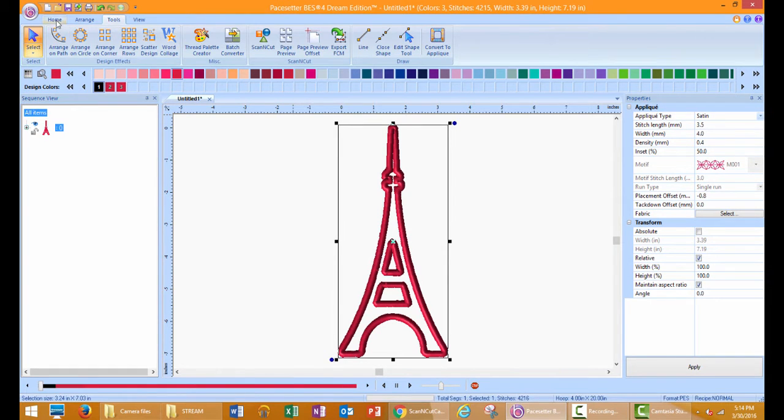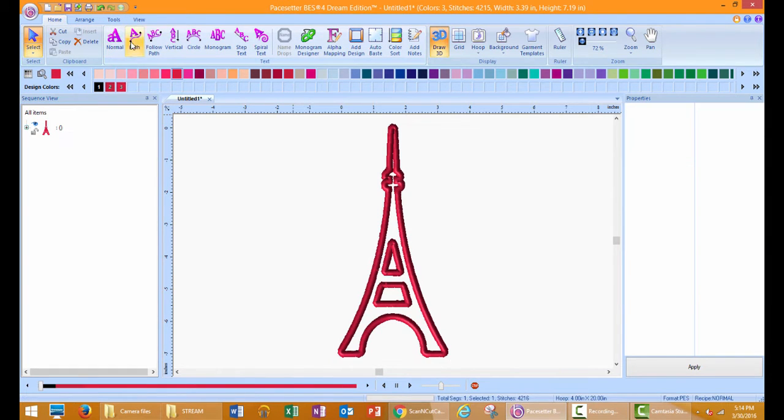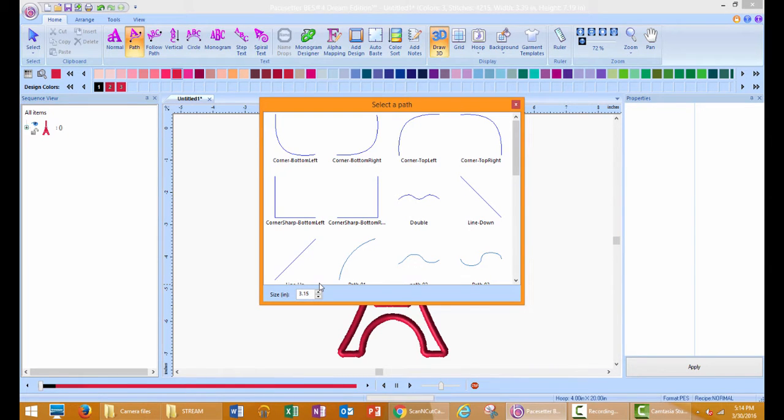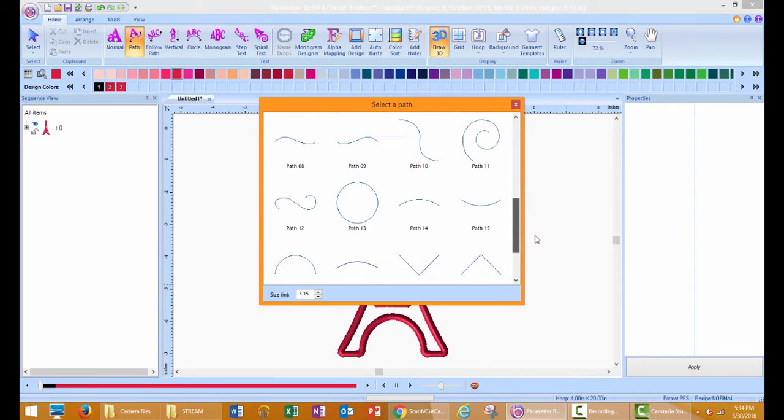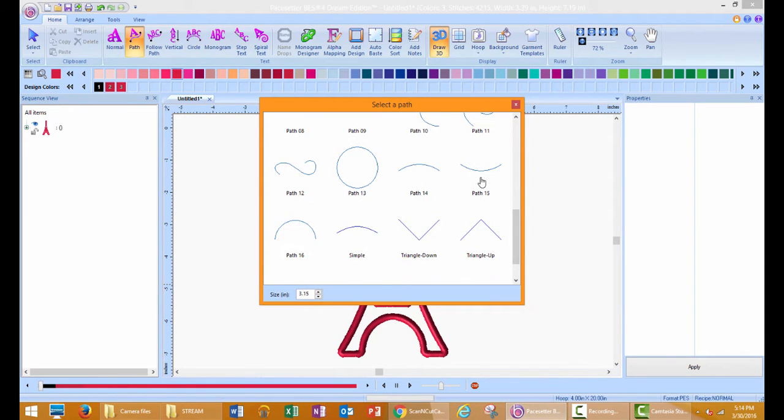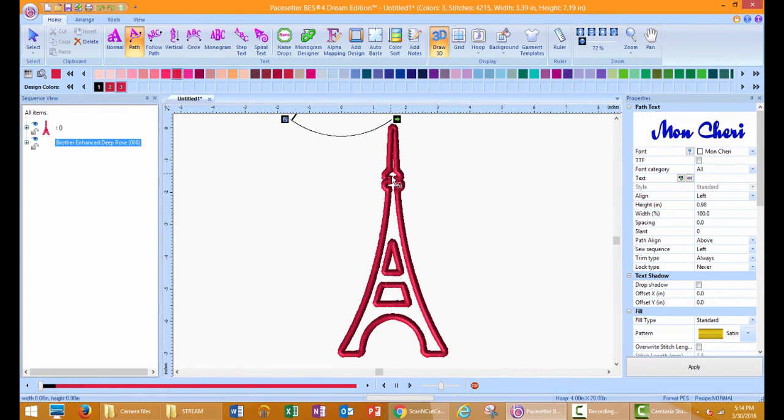Now let's add some text to our design. Click on the Home tab and choose the Path Text Tool. Click on the Design page to activate the tool. Scroll through and select a path. Type in your text and left mouse click away from the text to insert it or press Apply in the Properties window.